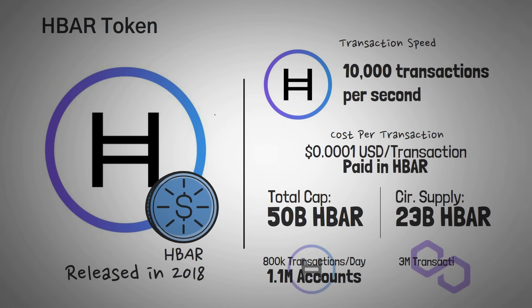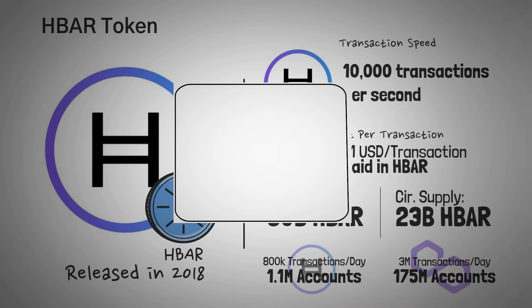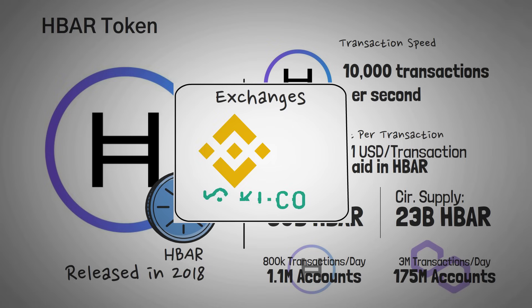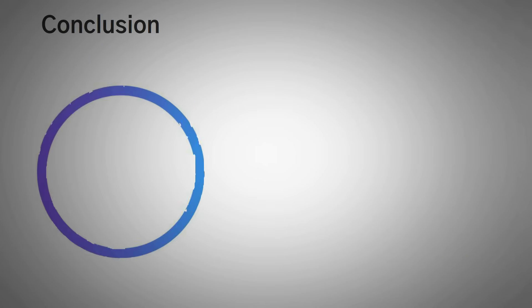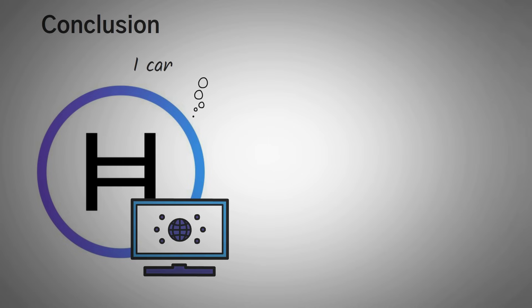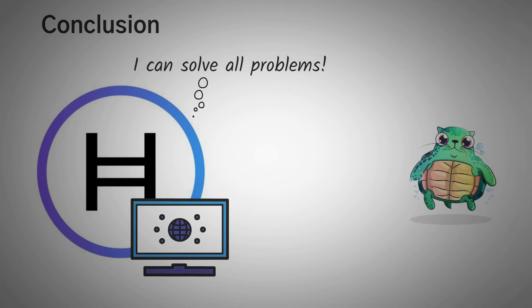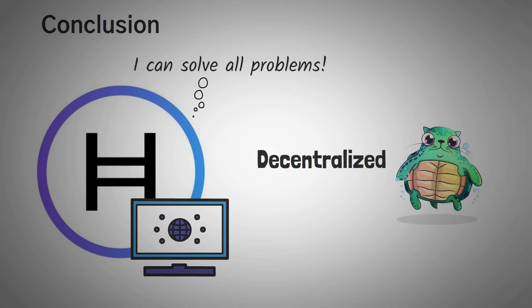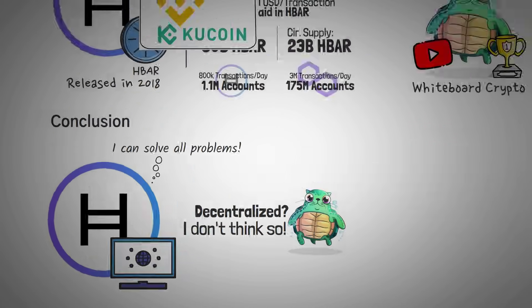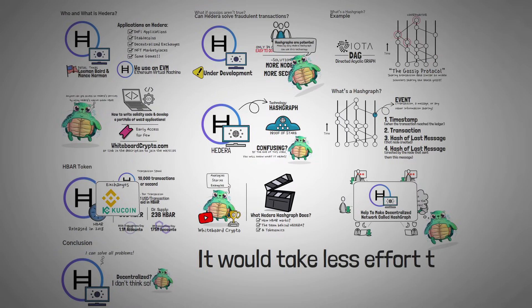Currently there are 800,000 transactions per day and over 1.1 million accounts on Hedera. In comparison, Polygon has 3 million transactions per day and 175 million unique accounts, so Hedera's user base is still quite small. It is available on major exchanges like Binance and KuCoin, with rumors of being added to Coinbase soon. It's neat to see a new type of ledger technology claiming to solve blockchain problems, but we need to note that only 39 major corporations are currently hosting nodes — which is not decentralized — and it would take far less effort for a malicious actor to take over the network.